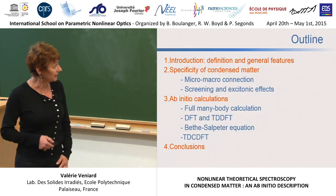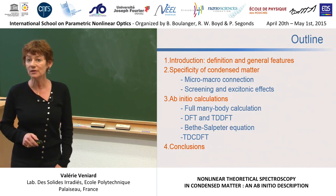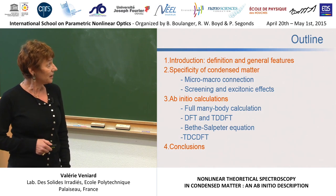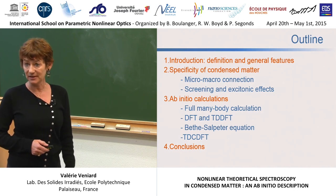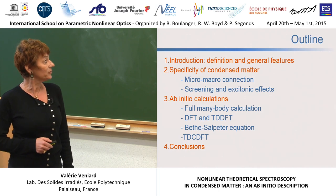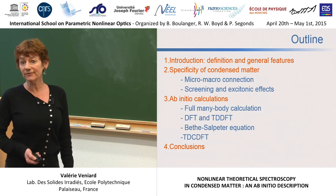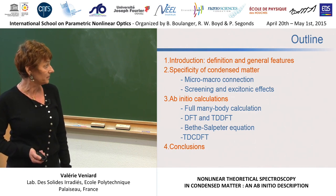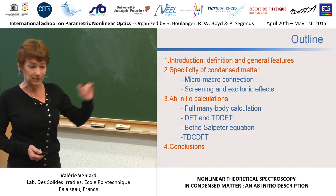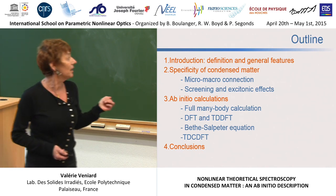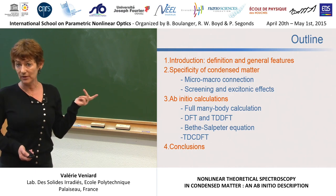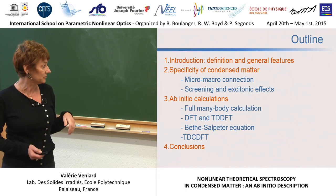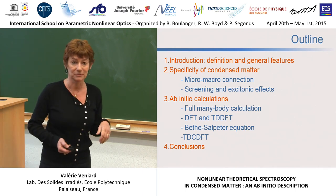I will try to explain what we do in condensed matter and what our ab initio calculations are. Here is the outline. I will start with an introduction and give some definitions and general features. Then I will talk about the specificity of condensed matter, and especially about the micro-macro connection, screening effects and excitonic effects, which can be very, very large. Then I will make a break for questions, and then go with the ab initio calculations and some conclusions.